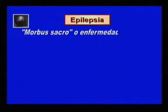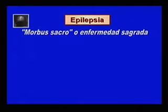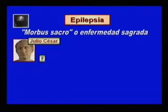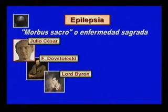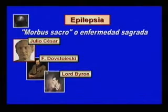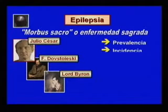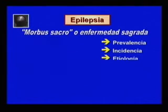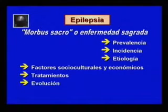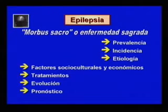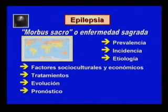Los griegos la llamaron Morbus Sacro o enfermedad sagrada, y han estado afectados por ella personajes célebres como el emperador Julio César y los escritores Fyodor Dostoyevsky y Lord Byron. La biología y los aspectos clínicos de la epilepsia entre las poblaciones no presentan diferencias inherentes. Sin embargo, diferencias en la prevalencia, la incidencia, la etiología, factores socioculturales, económicos, tipos de tratamientos, evolución y pronóstico se pueden observar entre países desarrollados y los que están en vías de desarrollo.